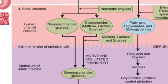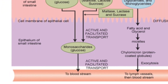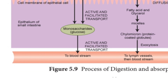In the small intestine, pancreatic enzymes break down polysaccharides into disaccharides, and then epithelial enzymes convert them into monosaccharides, which are then absorbed into the bloodstream by active and facilitated transport.